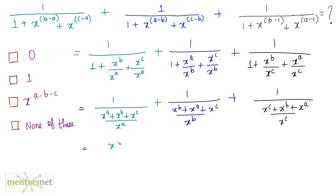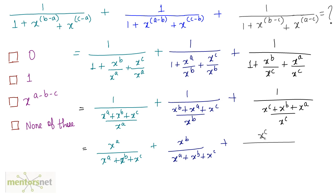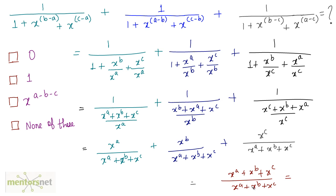This is equivalent to: x raised to power a upon x raised to power a plus x raised to power b plus x raised to power c, plus x raised to power b upon x raised to power a plus x raised to power b plus x raised to power c, plus x raised to power c upon x raised to power a plus x raised to power b plus x raised to power c. Taking the common denominator, the numerator equals the denominator, so the result is 1. Option B is the right answer.